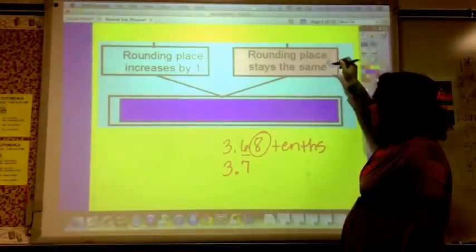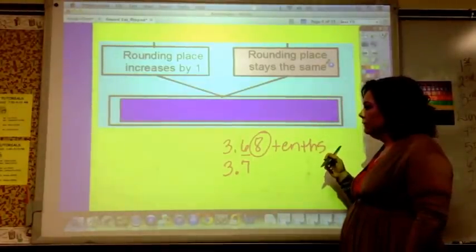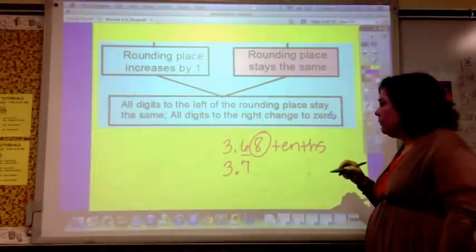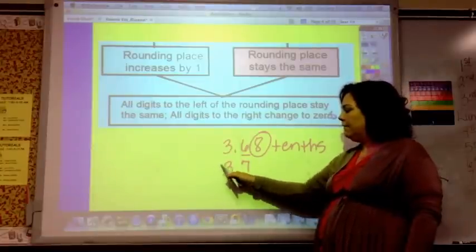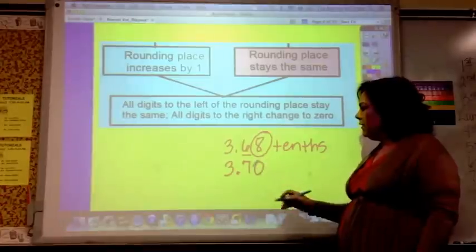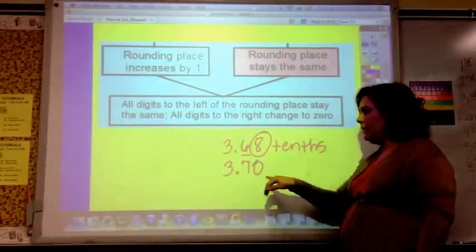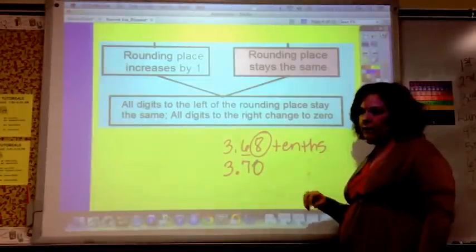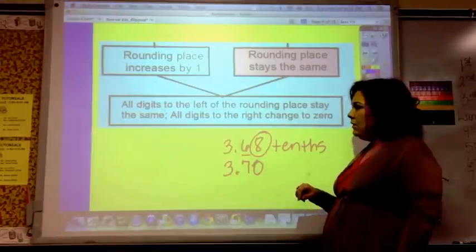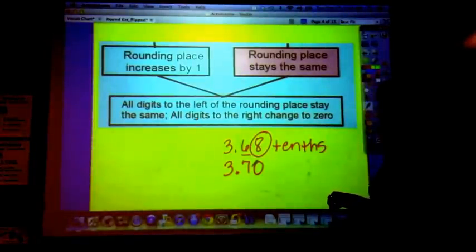If it's less than five, the rounding place stays the same. And then finally, all digits to the left of the rounding place stay the same. So to the left stay the same, and all the digits to the right change to zero. So if you were looking at this, you'd go sixty-eight, and then you know that that rounds to seventy, and that's seventy there. So go ahead and pause if you need to, and fill in the rest of your sheet.